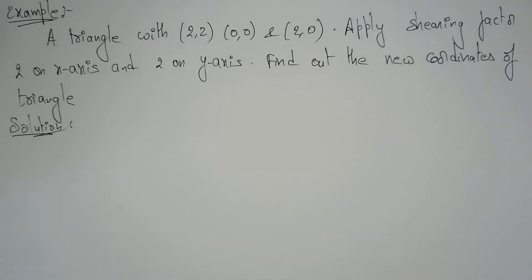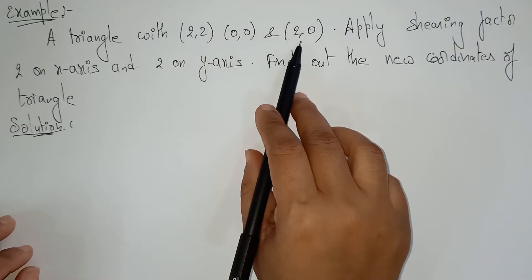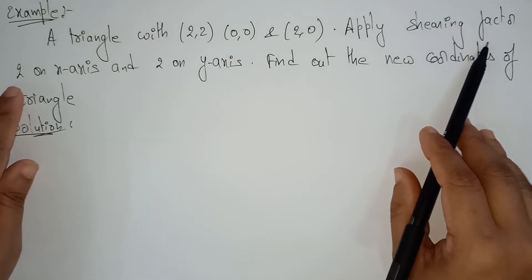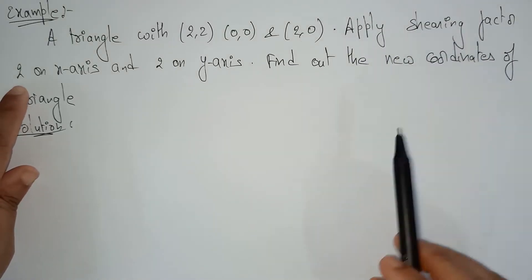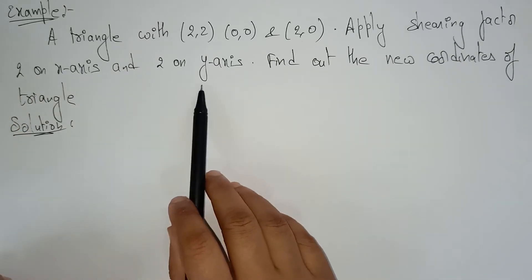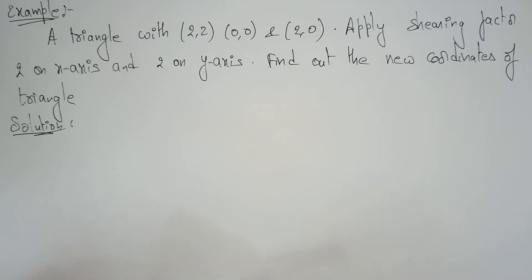Hi students, welcome back. Let's continue with 2D shearing. In the previous video I explained the interaction part of 2D shearing. Now let's look at an example. A triangle is given with coordinates 2,2 and 0,0 and 2,0. The shearing factor is: shearing factor on the x-axis, SHx, is 2, and the shearing factor on the y-axis, SHy, is also 2. Find the new coordinates of the triangle.